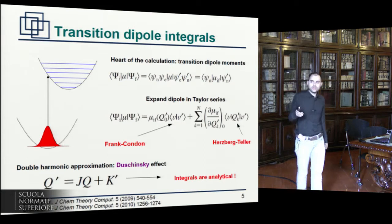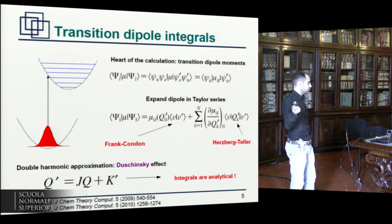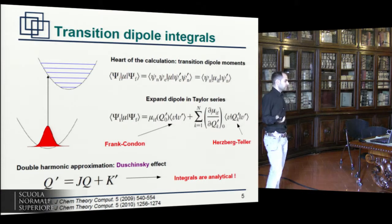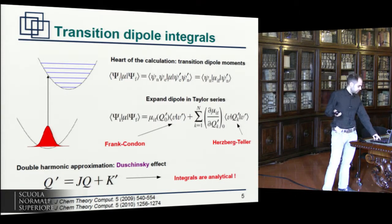And what one usually does is to employ the Dushinsky formula written here, where you essentially connect the normal modes of the excited state, Q prime, with those of the ground state, Q, using this simple relation where J is a matrix, it's called the Dushinsky matrix, and K prime is a shift vector. So you compute these two from the set of normal modes, and you can go on with your calculation.